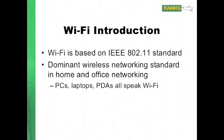Let's talk a little bit about Wi-Fi in general. Wi-Fi is based on the IEEE 802.11 standard. This was introduced back in 1997 and has been revised several times since then. Wi-Fi is the dominant wireless networking standard in home and office networking. So if you've used wireless networking with PCs, laptops, or PDAs, those all speak Wi-Fi — you've probably used 802.11 in the past. Because Wi-Fi is so prevalent and dominant in the marketplace, this makes it a really natural wireless networking solution in the embedded space as well.